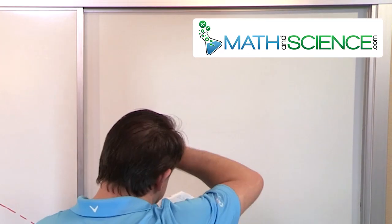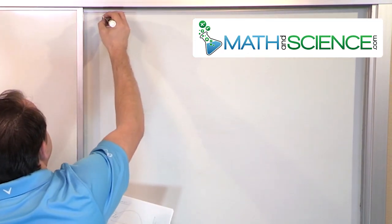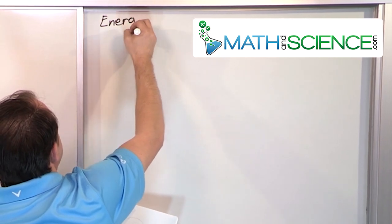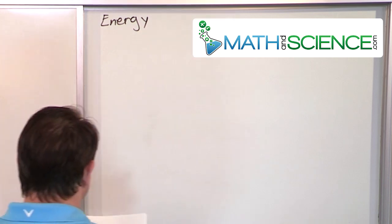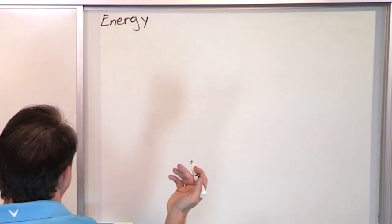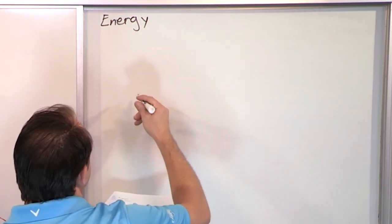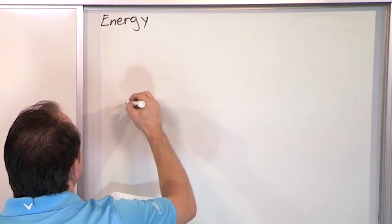Now the next thing we learn in physics typically is the concept of energy. I know that most everybody here has an idea of energy, but we're going to talk just a brief minute about energy. So the best way I can describe energy, or at least one type of energy, is a roller coaster.